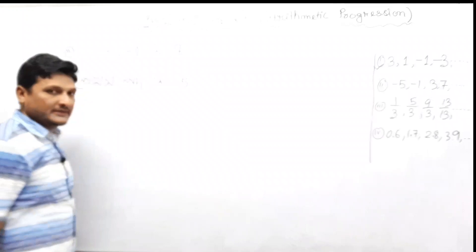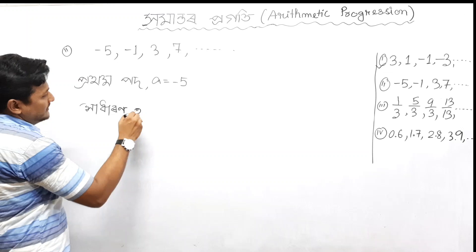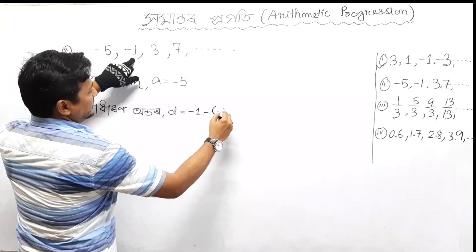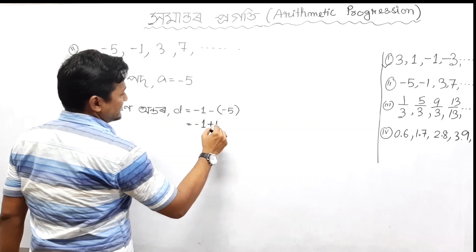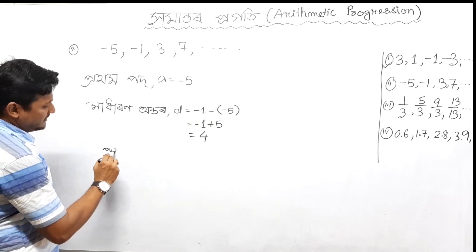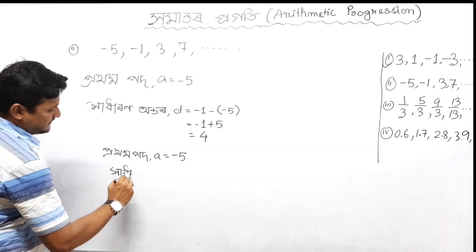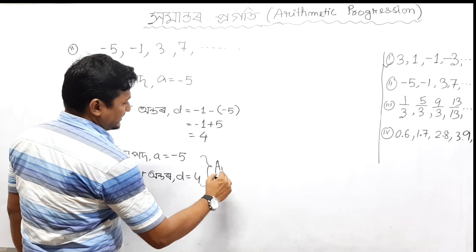A is equal to minus 5. P is equal to minus 5; minus minus plus 1, A is equal to 5. This is 4. Terminami — what is this? Pratham pod. A is equal to minus 5, and this is the answer.